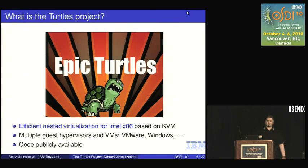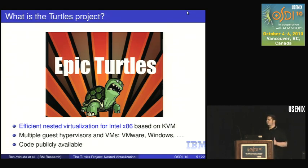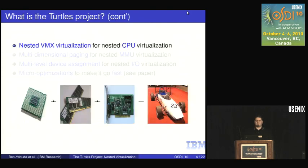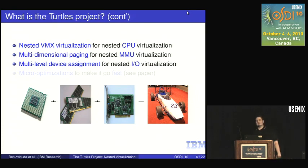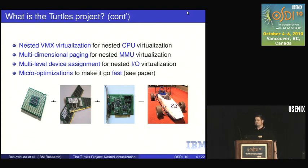What is the Turtles project? It's efficient nested virtualization for Intel x86 systems, based on the KVM hypervisor. It's fairly mature for a research project. It can run multiple other hypervisors — VMware, Linux, Windows — and the code is publicly available. It has four components: nested CPU virtualization, MMU virtualization via something we call multidimensional paging, I/O handled by multilevel device assignment, and a set of optimizations. Due to lack of time, I won't cover the optimizations — details are in the paper.